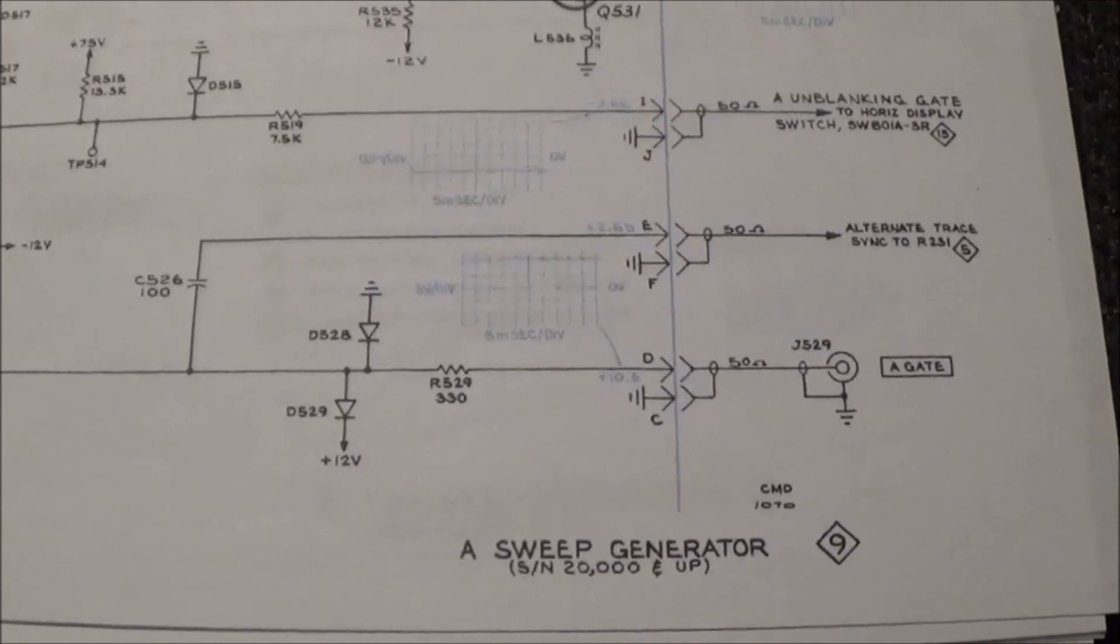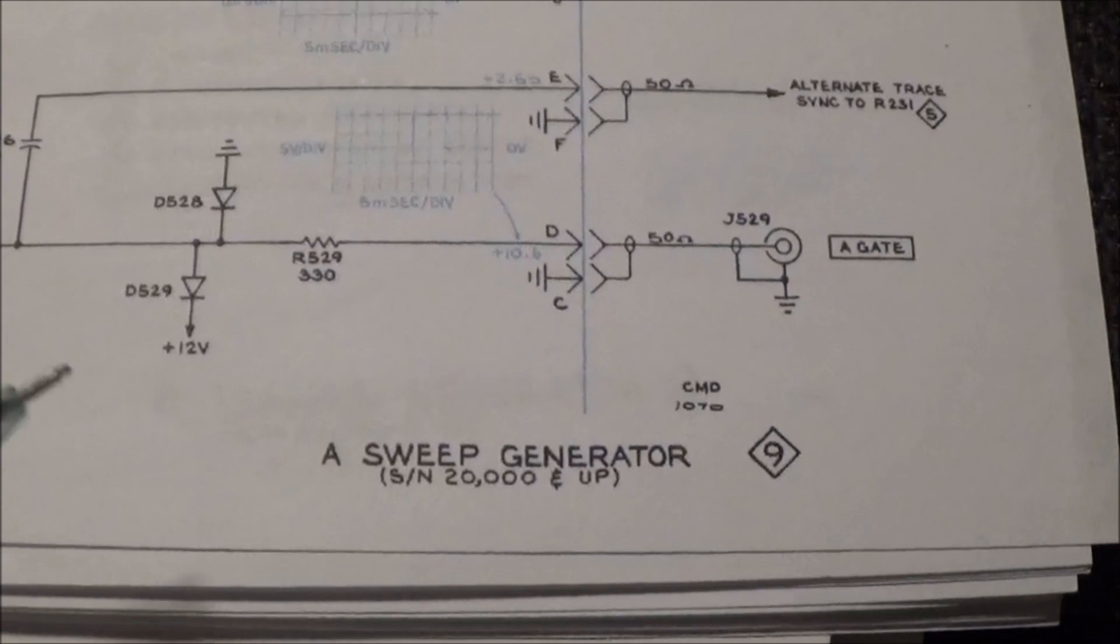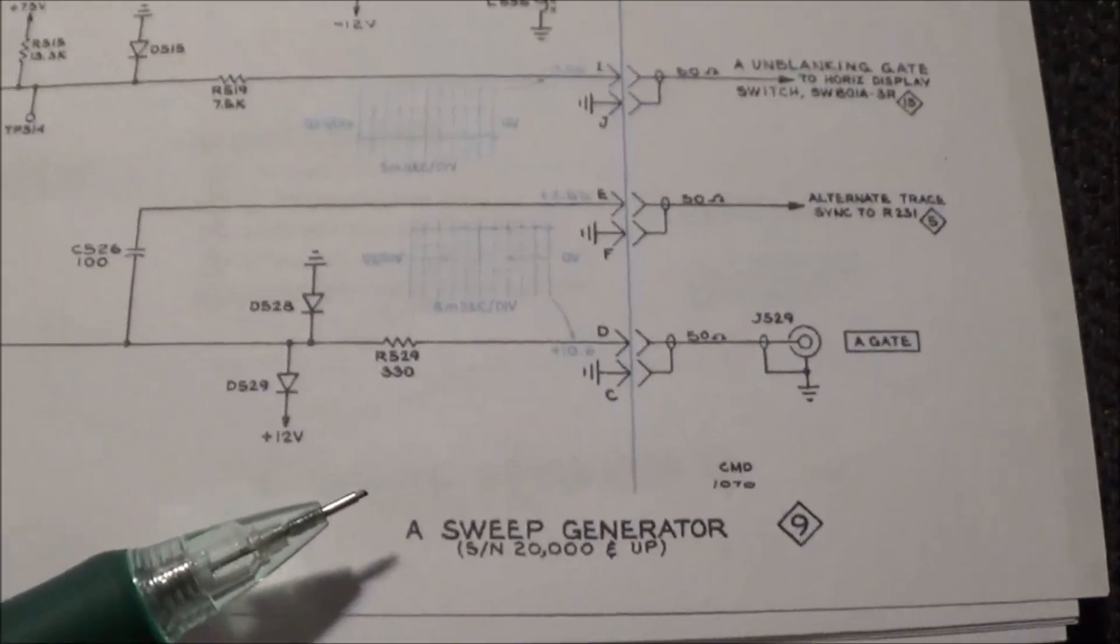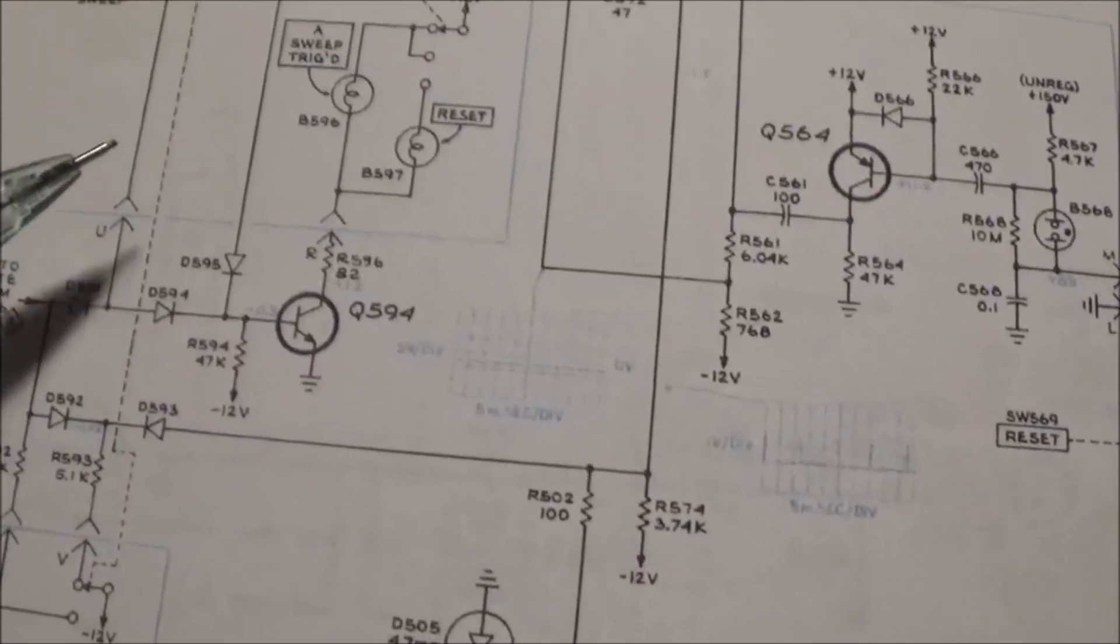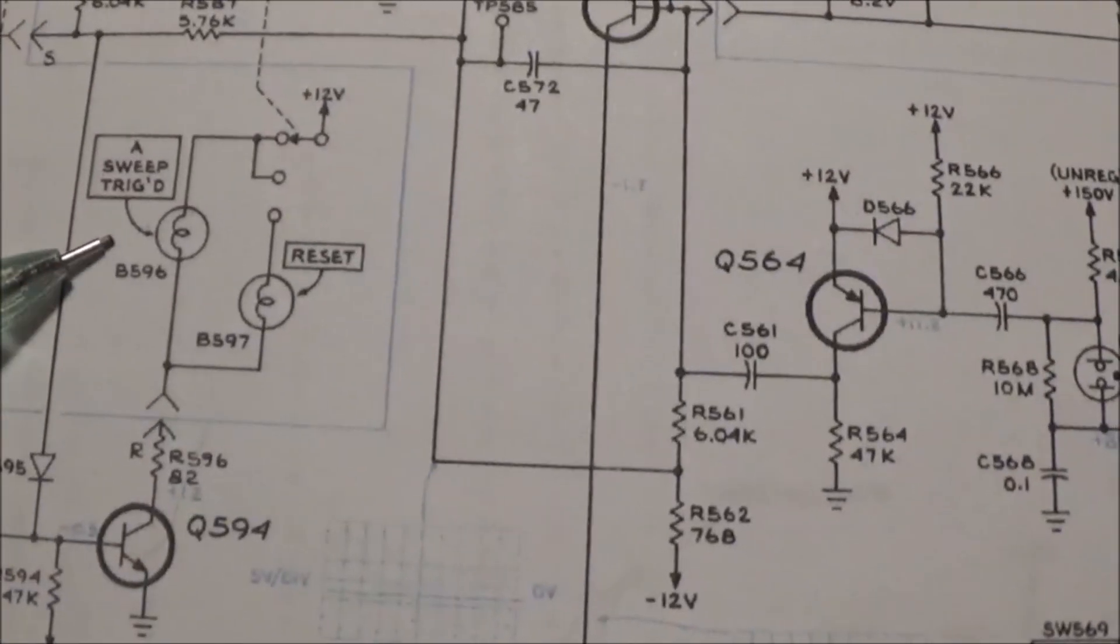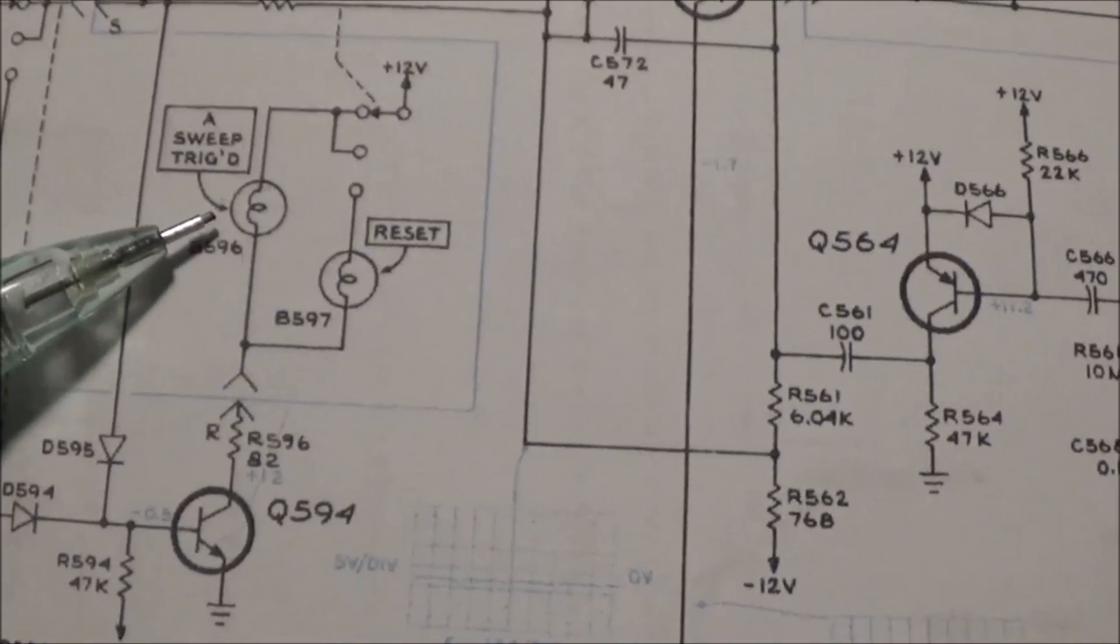Okay, so where this little bulb occurs in the circuitry is in the A sweep generator section. We're looking at the schematic here. It's right up here. This is it right here, B596, the A sweep triggered indicator lamp.